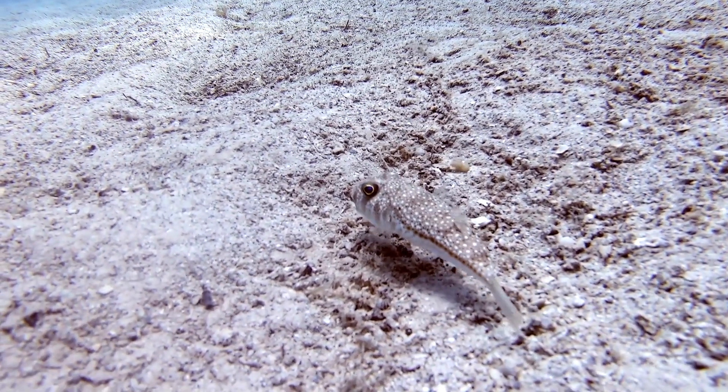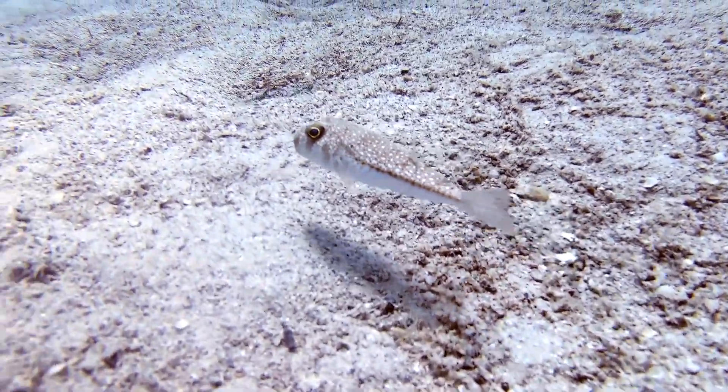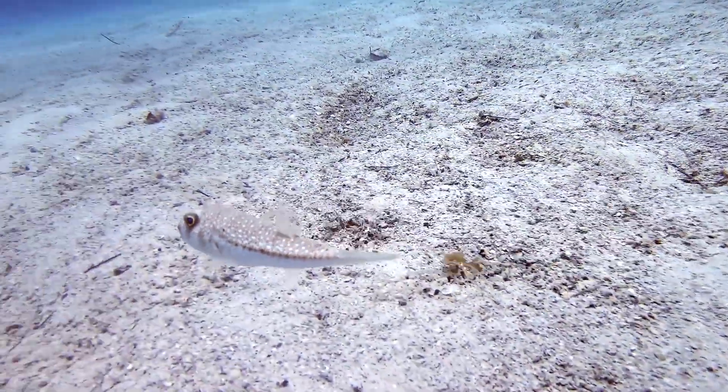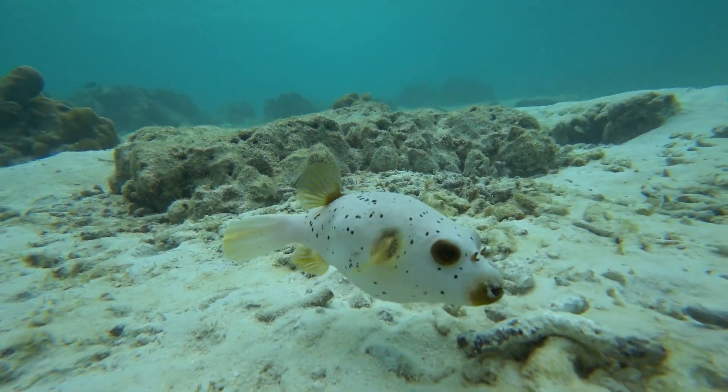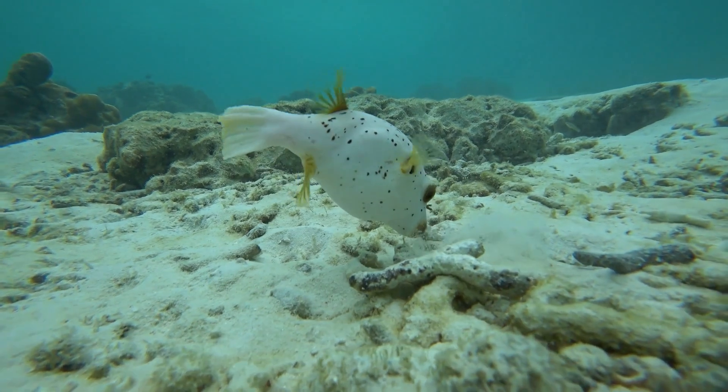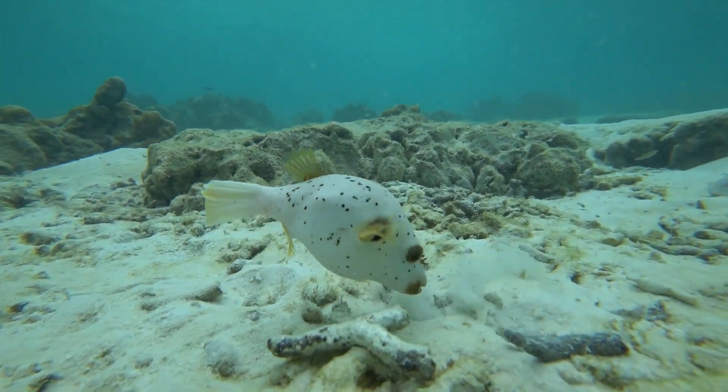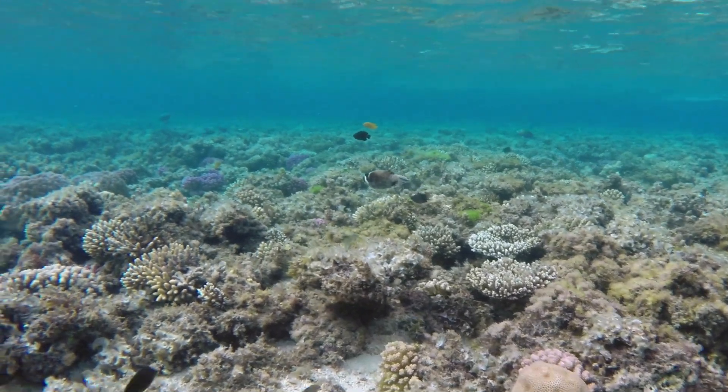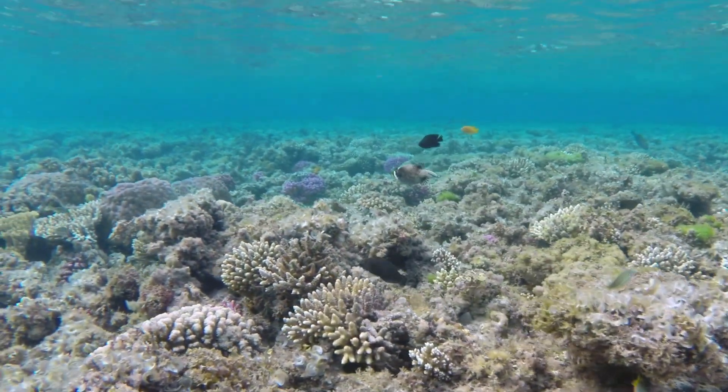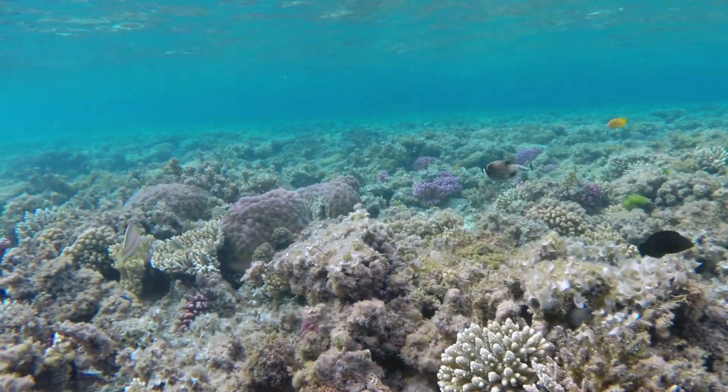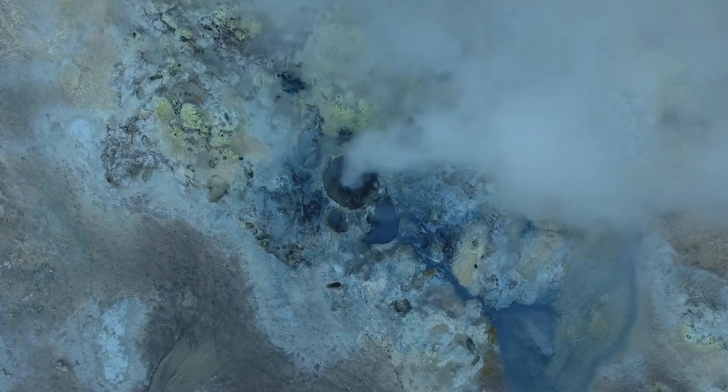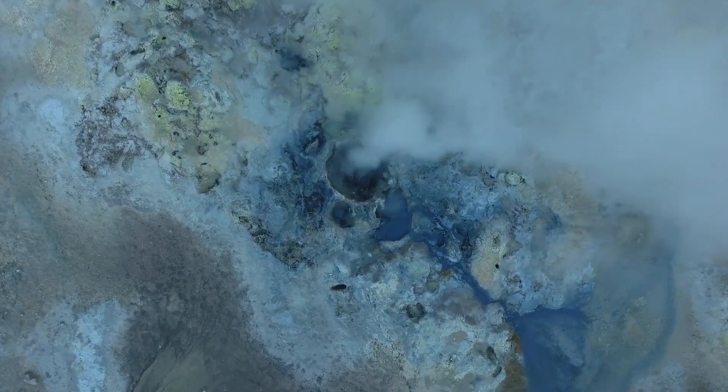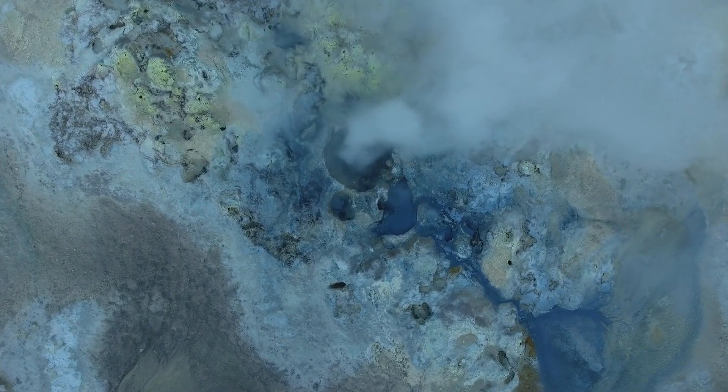The prospect becomes even more tantalizing when we consider the twilight zone, a region deep within the Hycean oceans. While initially it may seem counterintuitive to expect life in such an environment, devoid of sunlight, we must remember that life on Earth thrives in the most unexpected places. From hydrothermal vents in the deep ocean to acidic lakes, life has an uncanny ability to adapt and flourish. In the twilight zones of Hycean planets, organisms might rely on chemical energy derived from the planet's geothermal activity, or other intriguing processes rather than photosynthesis.